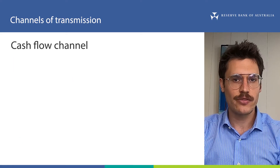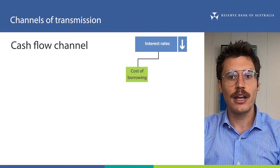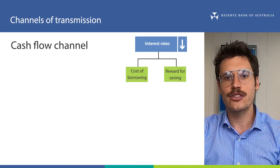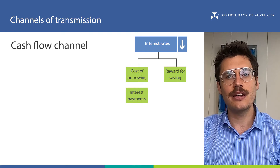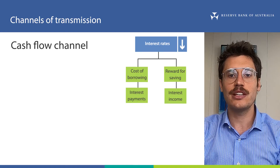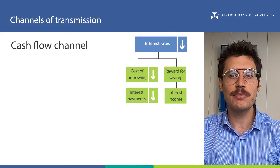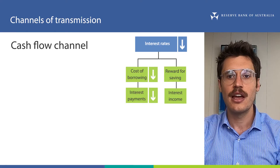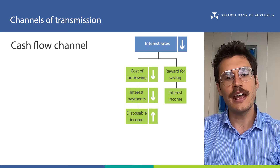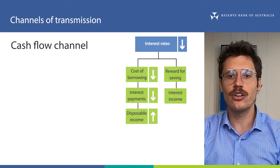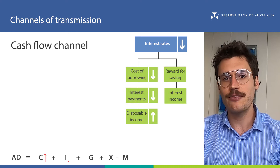The next channel is called the cash flow channel. Interest rates determine the cost of borrowing and the reward for saving, so they affect both the cash that borrowers pay as interest on their borrowings and the cash that savers receive as interest on their savings. For example, lower lending rates reduce the interest repayments households and businesses must make on their loans, and this increases the disposable income — or what we call cash flow — they have available to spend on goods and services. In our aggregate demand equation, this can increase consumption and investment.